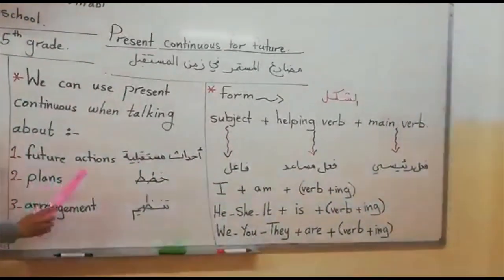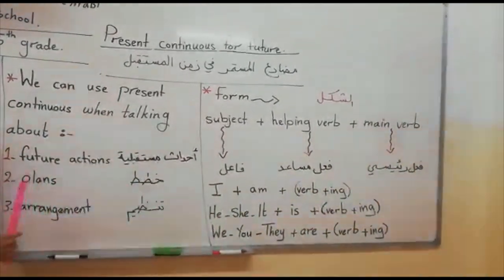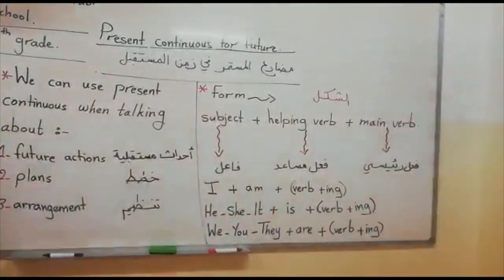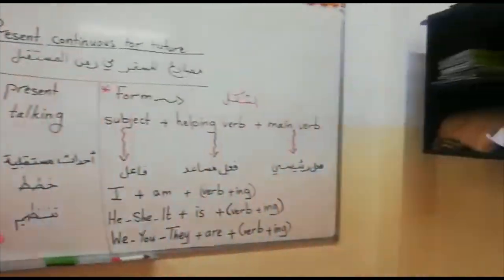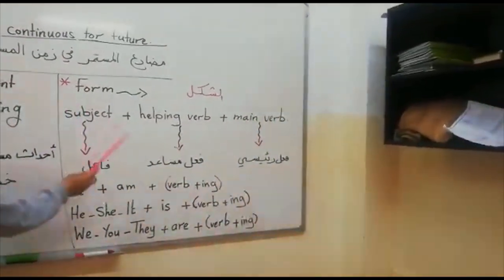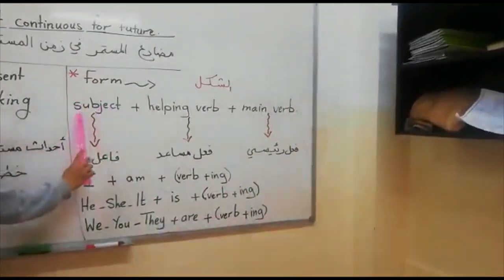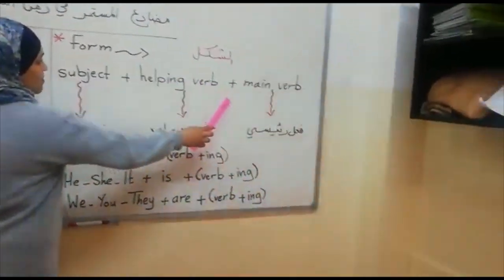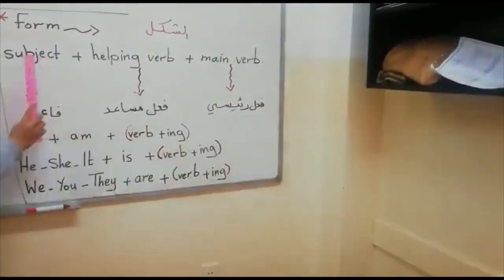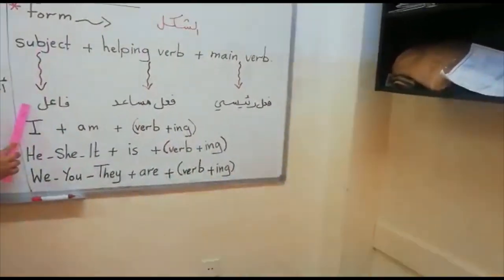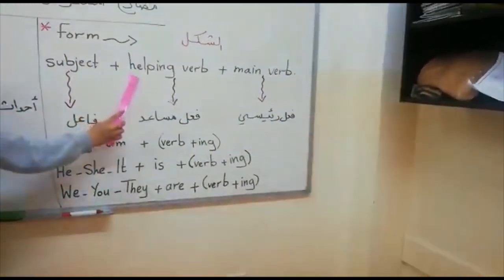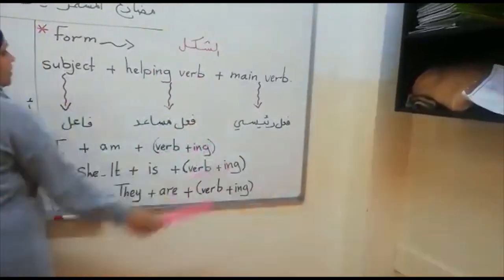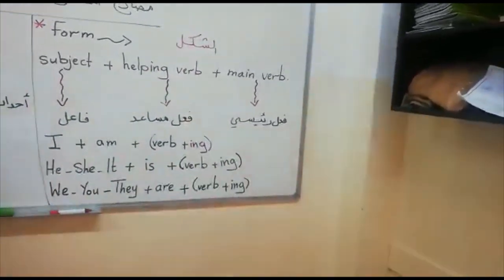Plans means 'Uta', Arrangements. The formula is: Subject plus helping verb plus main verb. Subject means 'Fa'al', helping verb means 'Fi'l Musa'id', and main verb means 'Fi'l Asasi'.